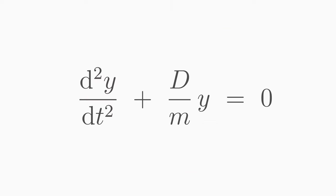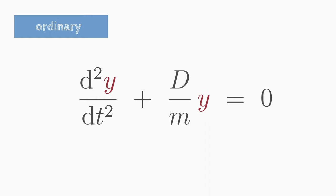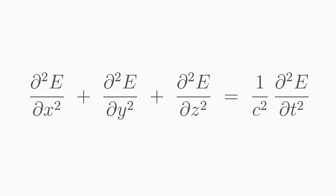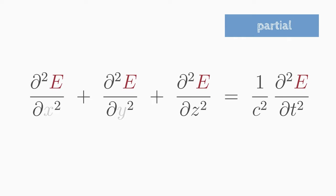Our equation for the oscillating mass is an ordinary differential equation. Ordinary means that the function y we are looking for only depends on one variable — in this case, on the time t. The wave equation, on the other hand, is a partial differential equation. Partial means that the searched function e depends on at least two variables and derivatives with respect to these variables occur in the equation.